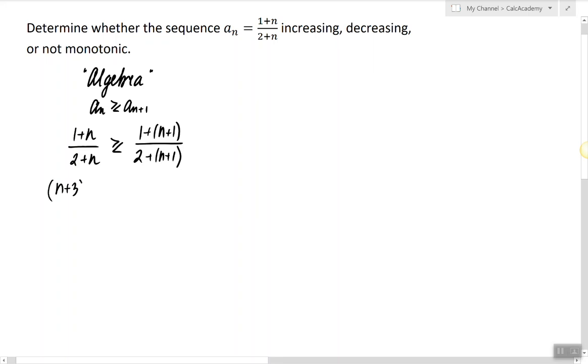So on the left side I will have n plus 3 times n plus 1, which I'm still not sure whether it's greater or less than 2 plus n. So I'm changing the order here, but the order doesn't matter. So we have 3 plus n times 1 plus n.